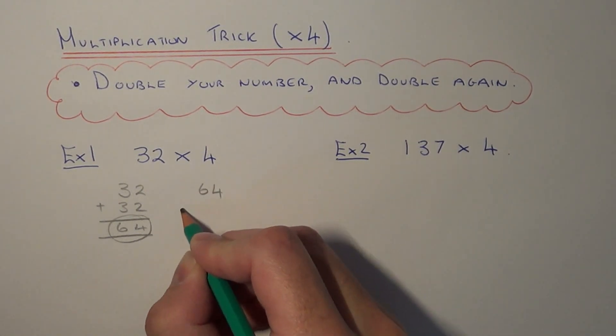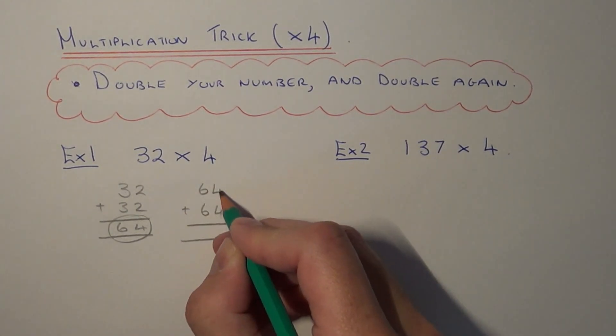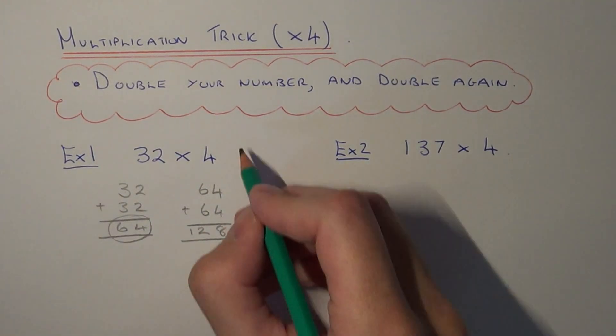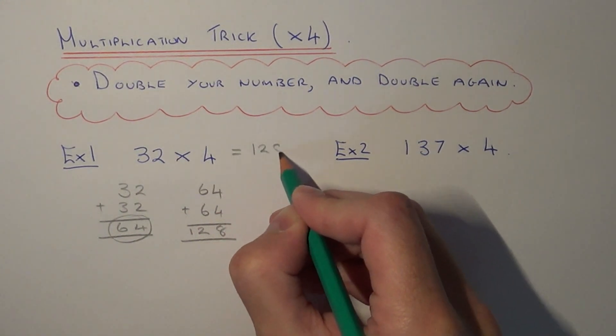So if we do 64 add 64, 4 add 4 is 8, 6 add 6 is 12, so our final answer is 128.